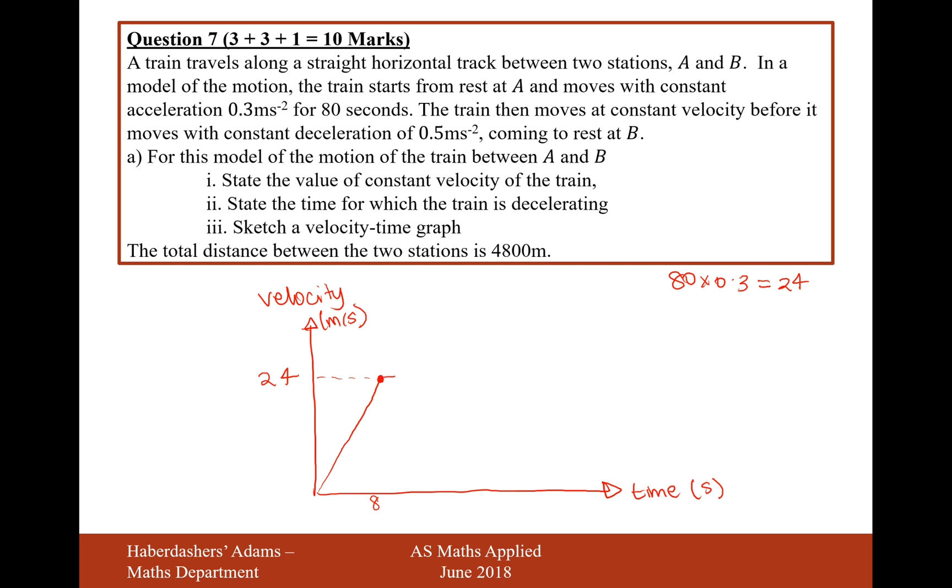Then it's going to travel at a constant speed. Does it say how long for? But then the train will start to decelerate, coming to a rest at B. Now this acceleration here is 0.3, this deceleration here is 0.5, so it's going to be a bit steeper than what we saw before.